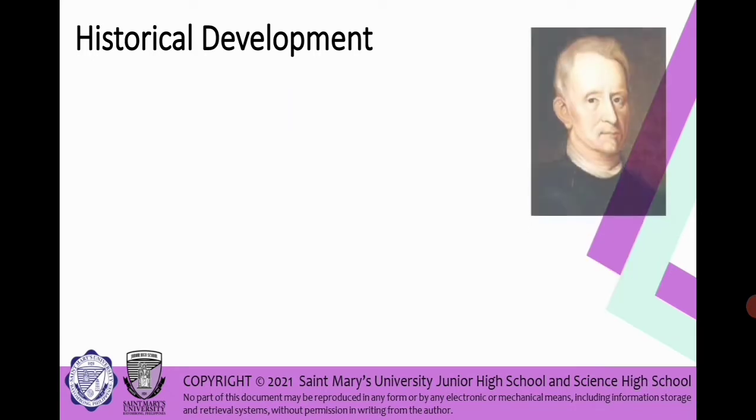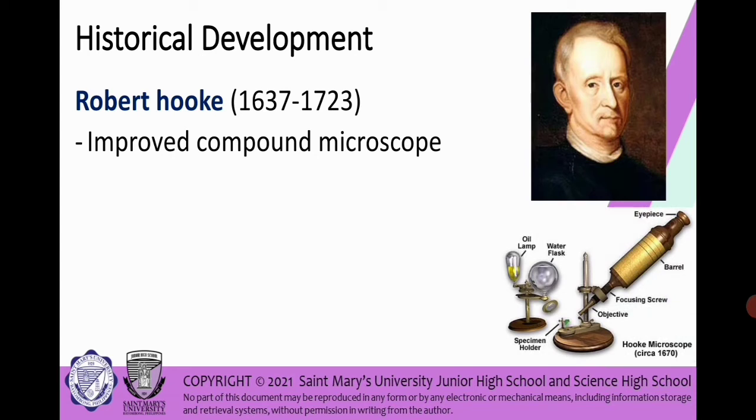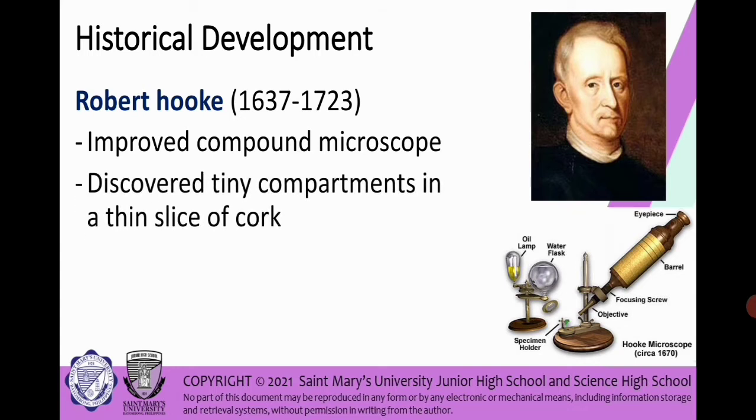And the years we passed by, we have this one who is Robert Hooke, wherein he improved the compound microscope. So that is one of the instruments that he used or he discovered or improved. The other one we have the parts which is the oil lamp and water flask and the other microscope that he used. It has eyepiece, barrel, focusing screw, objective and also specimen holder, and it is called also as Hooke Microscope. Robert Hooke discovered tiny compartments in thin slides of a cork, wherein he called compartments as cells. So that is the historical development of microscope.